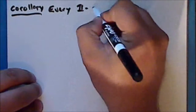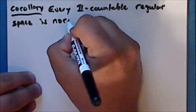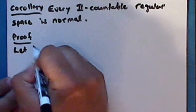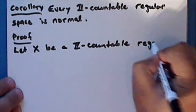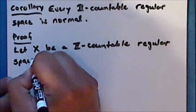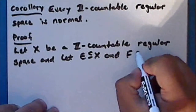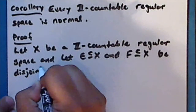As a second corollary, we will prove that every second countable, regular space is normal. Proof: let X be a second countable, regular space, and let the subsets E and F be disjoint closed sets.